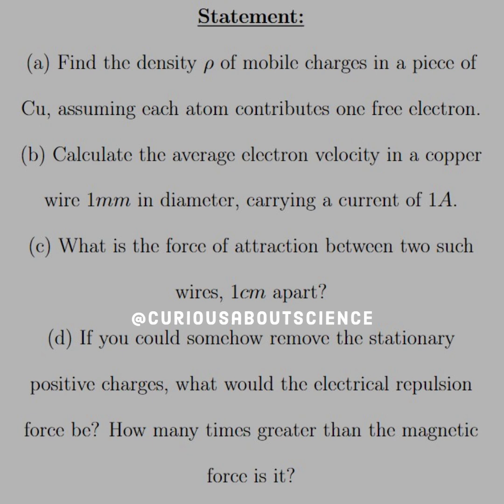B, calculate the average electron velocity in a copper wire 1 mm in diameter carrying a current of 1 amp.